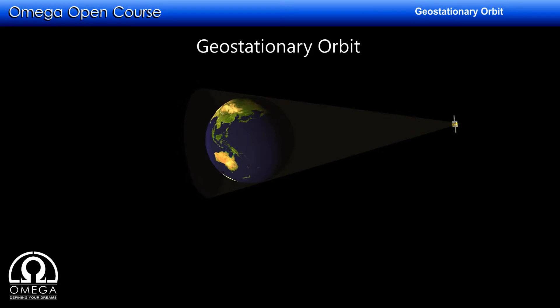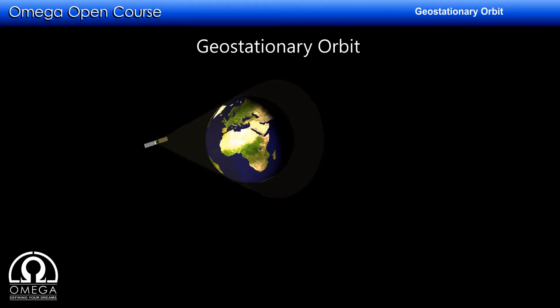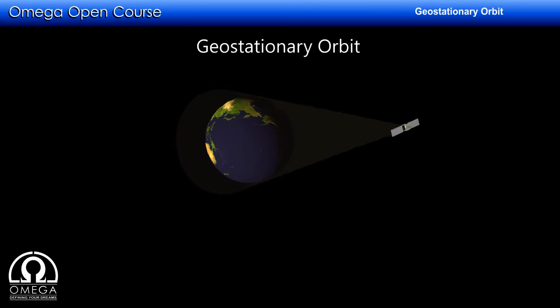Geostationary orbit is an orbit in which when a satellite moves, it appears stationary when seen from the Earth. In other words, the position of a satellite in geostationary orbit remains fixed with respect to the surface of the Earth.